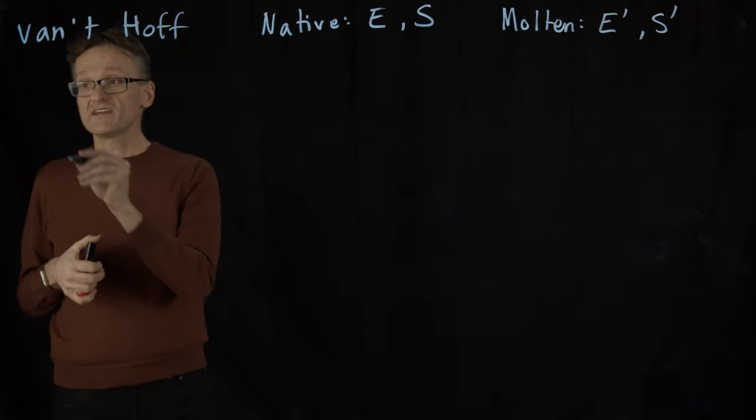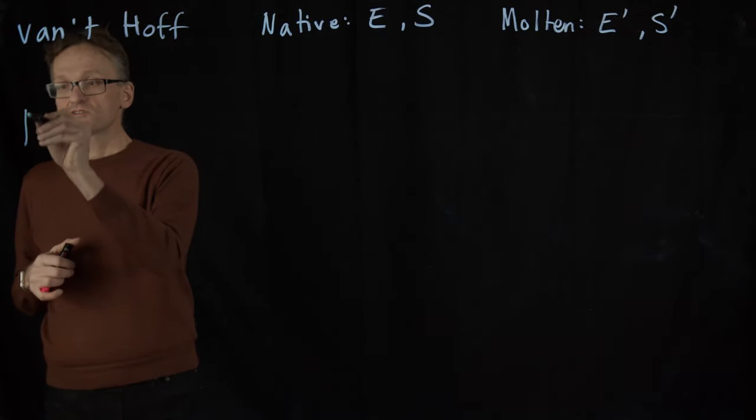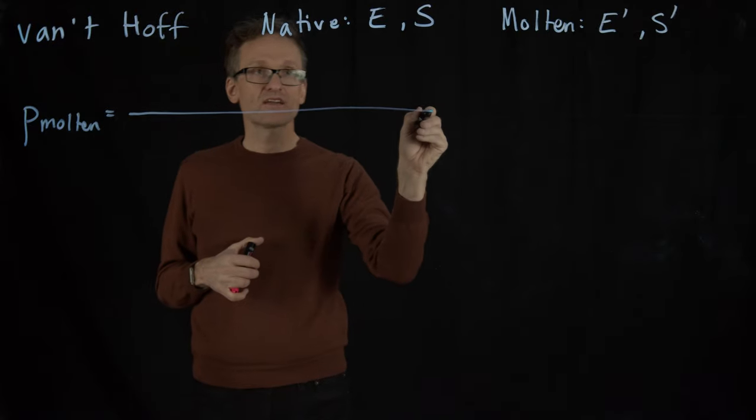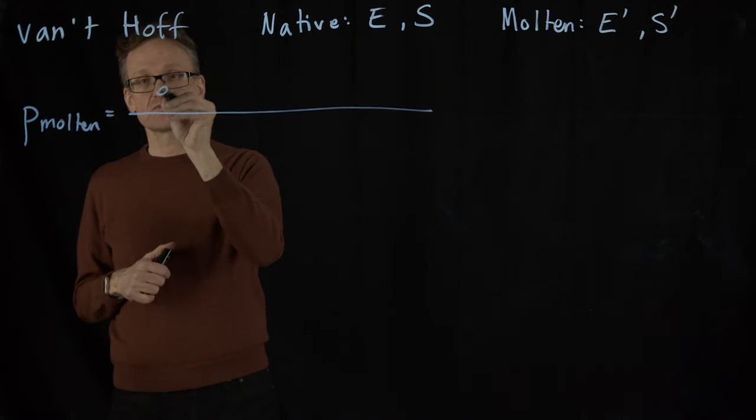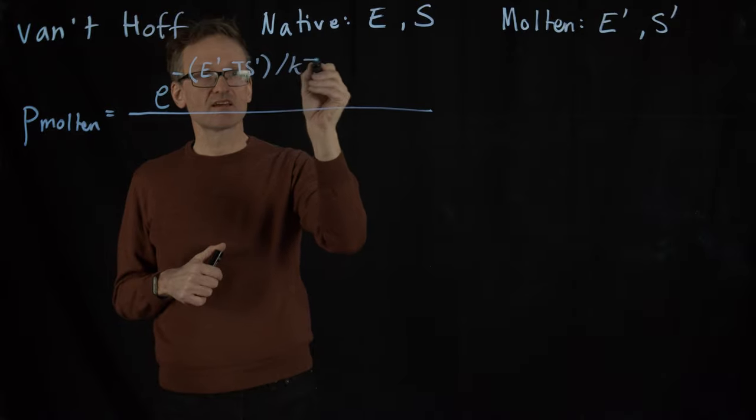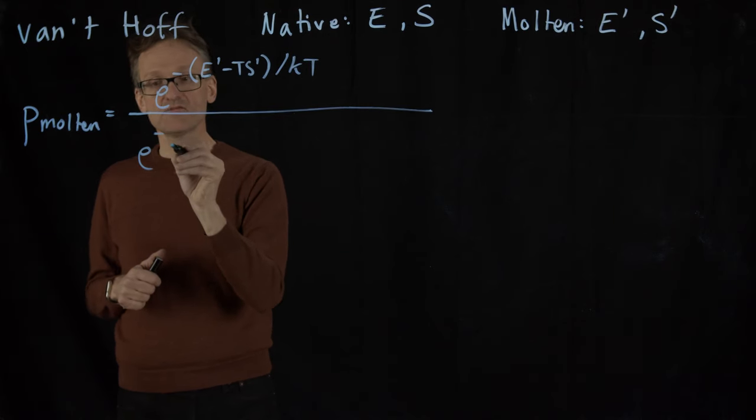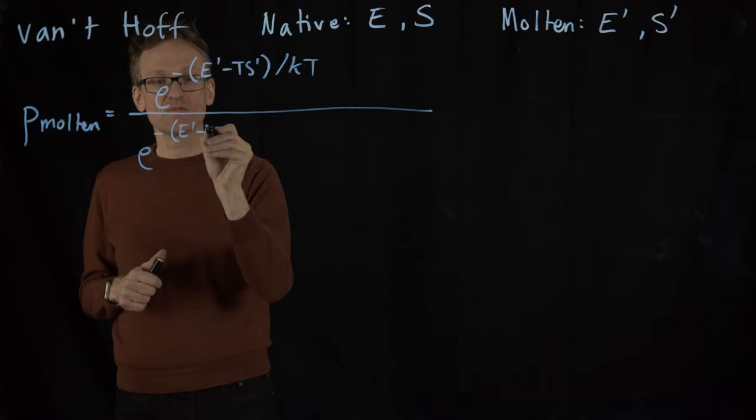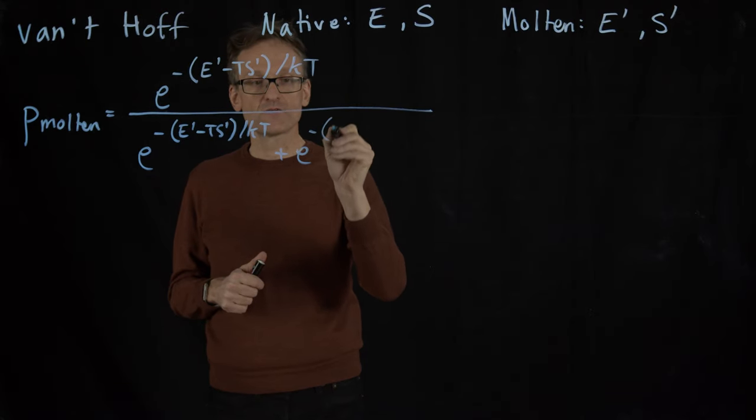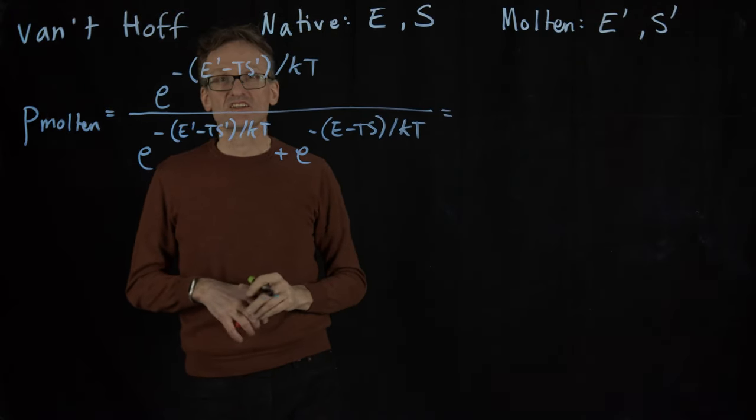And then I just write down the Boltzmann distribution. I'm also going to normalize this with the partition function. That's trivial. There are just two states. So the probability of being molten, I write down here, that's going to use the terms from the second expression, right? E raised to minus E' minus TS' divided by kT. And to normalize this I will now need both the native and the molten state: e raised to minus E' minus TS' divided by kT, same as above, plus the term without primes, e to minus E minus TS divided by kT.